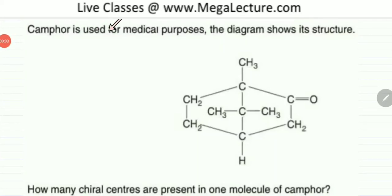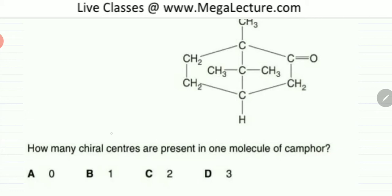The following question reads that camphor is used for medical purposes. The diagram shows its structure. So this is a molecule of camphor and you're being asked how many chiral centers are present in one molecule of camphor.